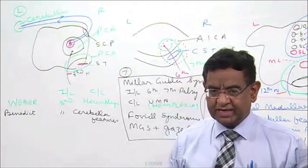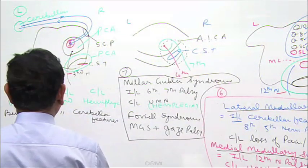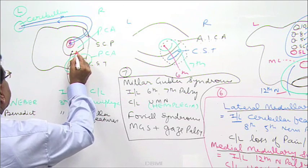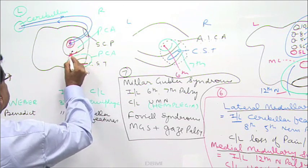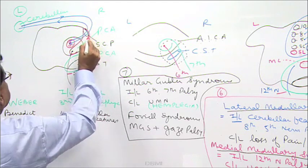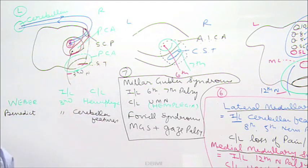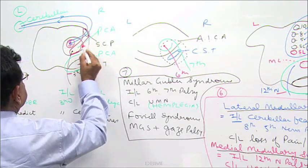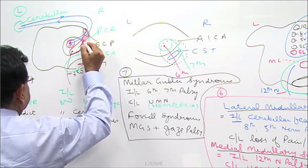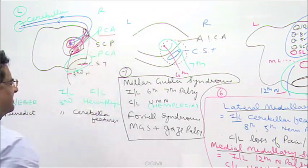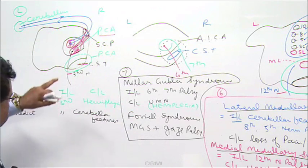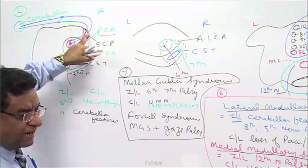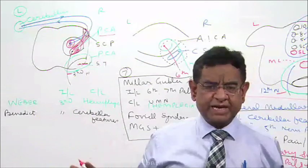At times, the involvement is of the third nerve nucleus and the superior cerebellar peduncle, while the red nucleus is not involved. The artery is the same — PCA. Structures involved are the right-sided third nerve and right-sided superior cerebellar peduncle. The clinical manifestation will be the same as Benedict syndrome.